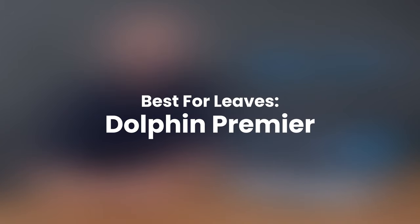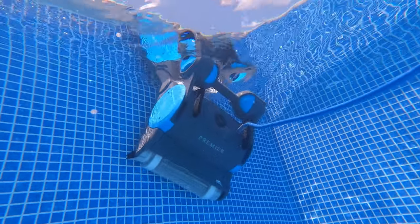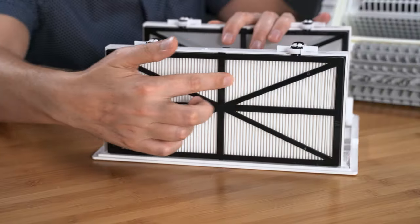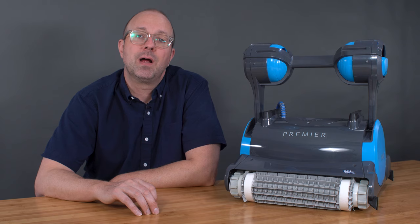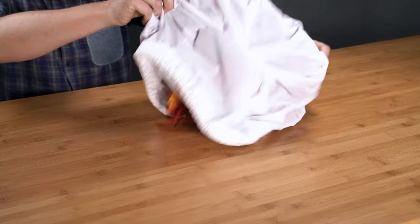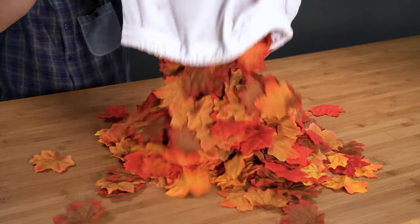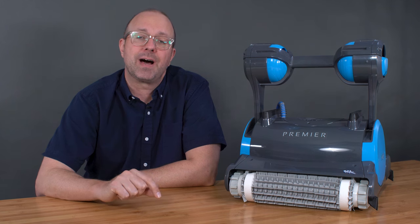Best for leaves: the Dolphin Premier. Its dual commercial-grade motors, multimedia, nanofilters, weekly timer, and more set it above. Its leaf bag is exclusive to the Premier, meaning you cannot find it anywhere else. So if you have a lot of leaves, this is the unit you want.